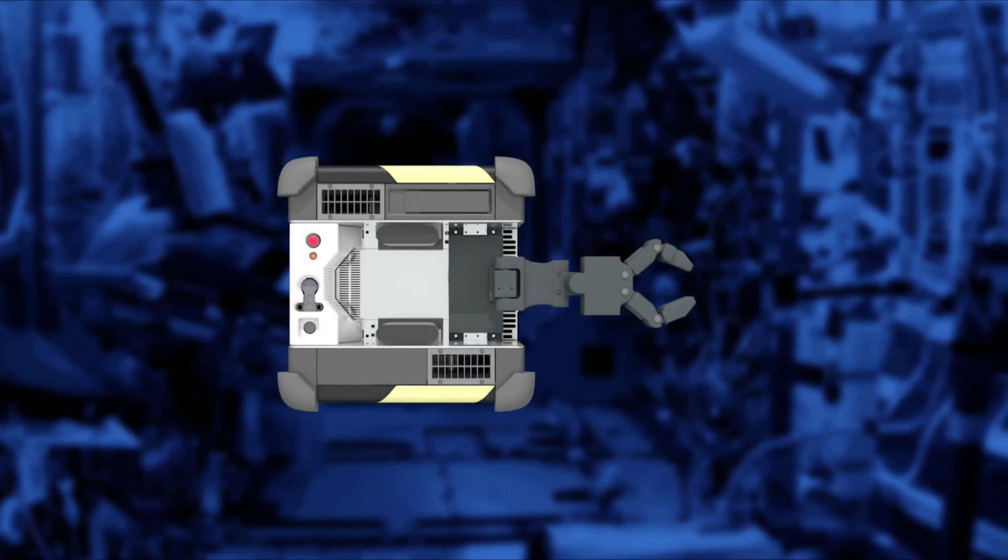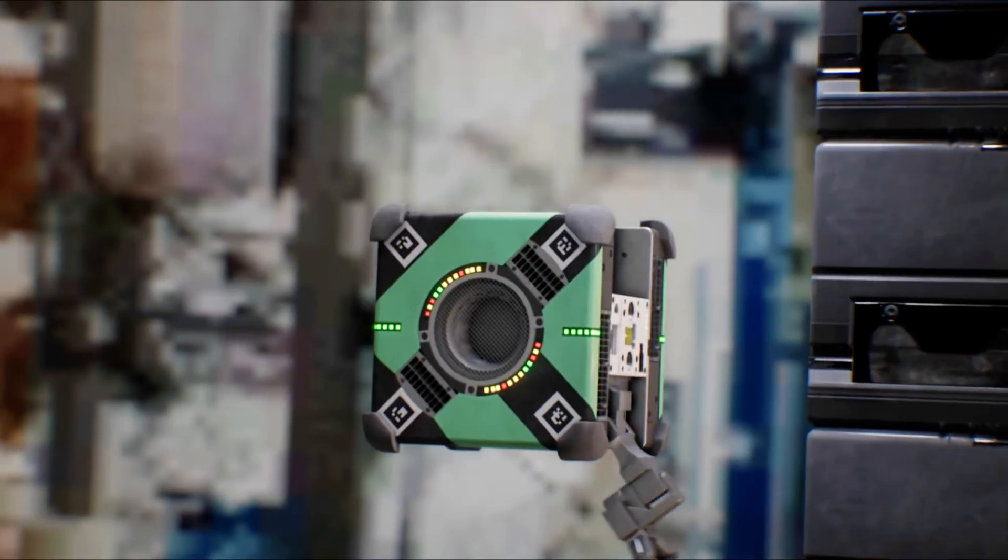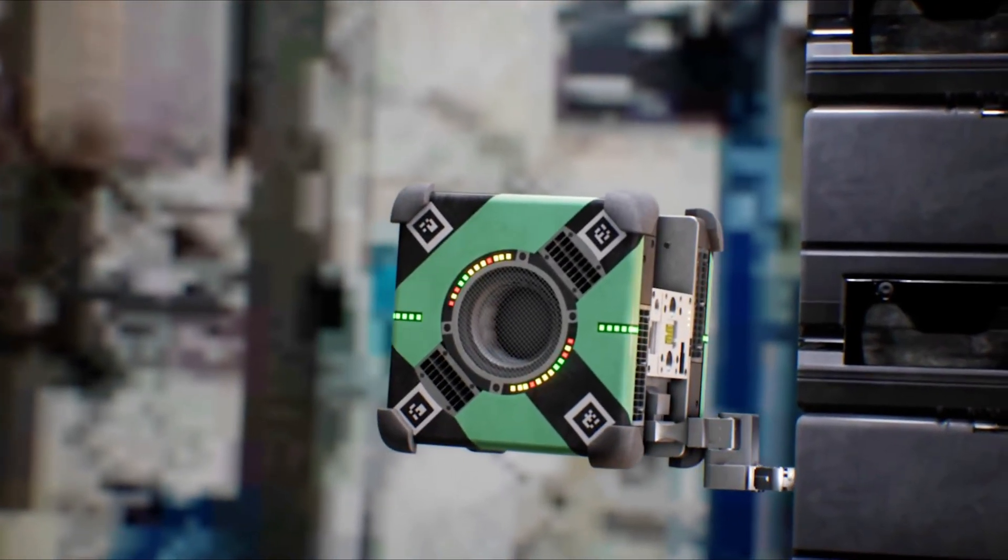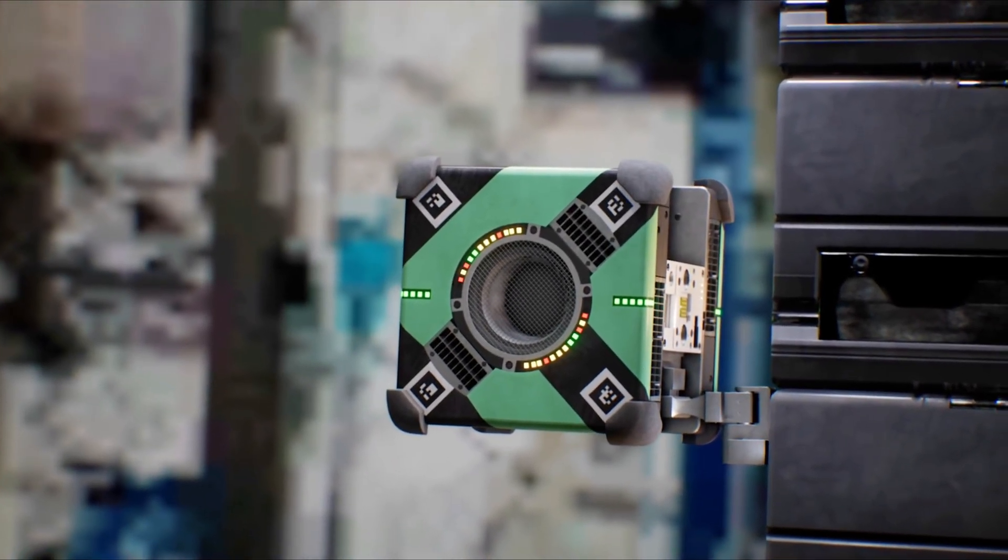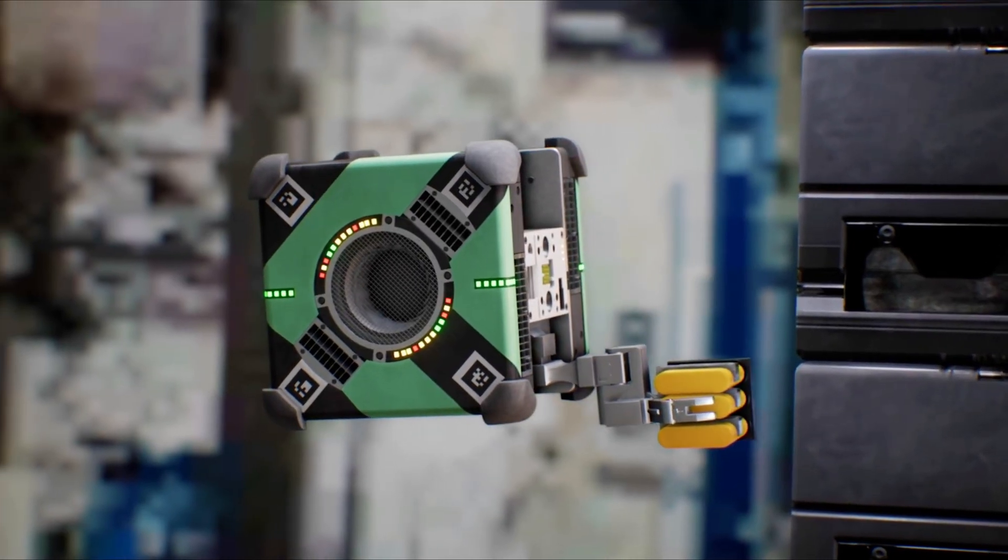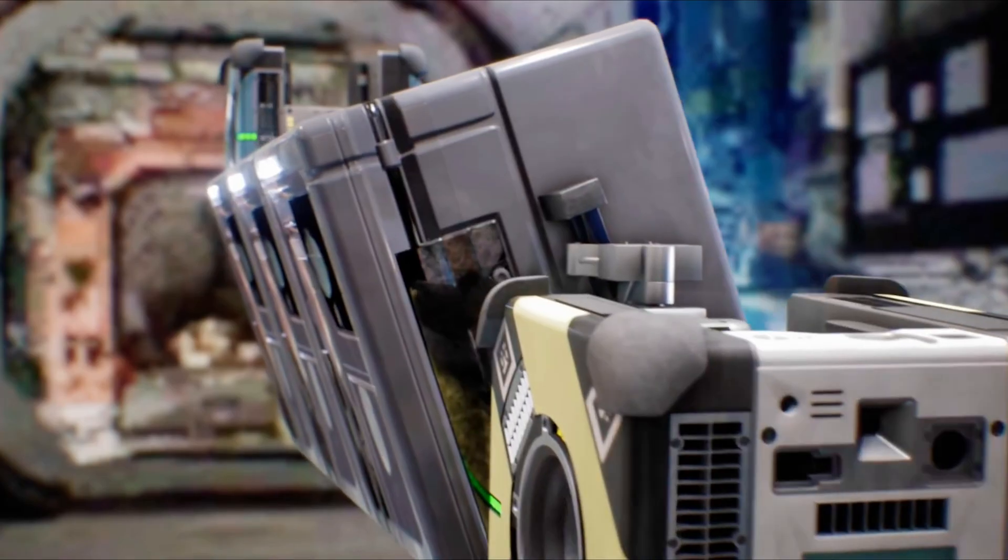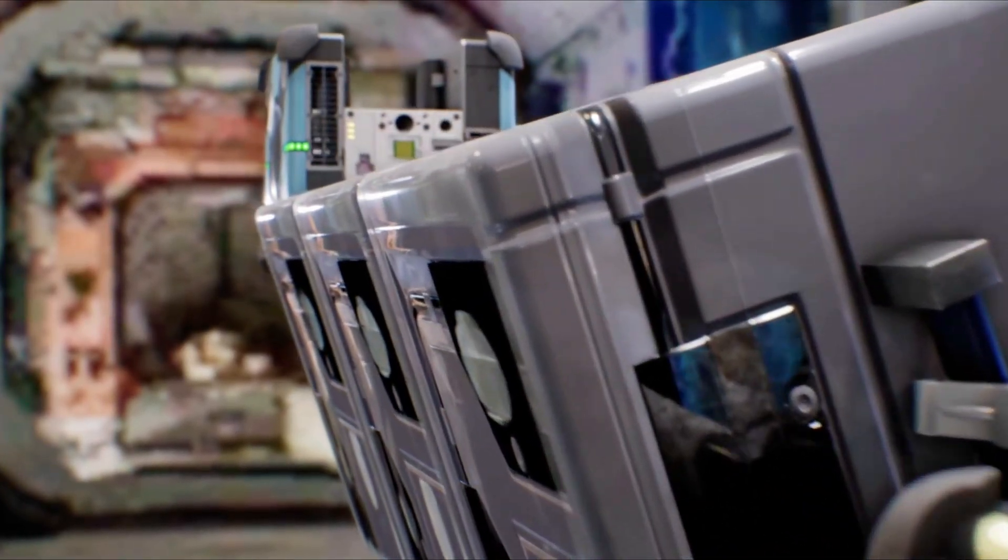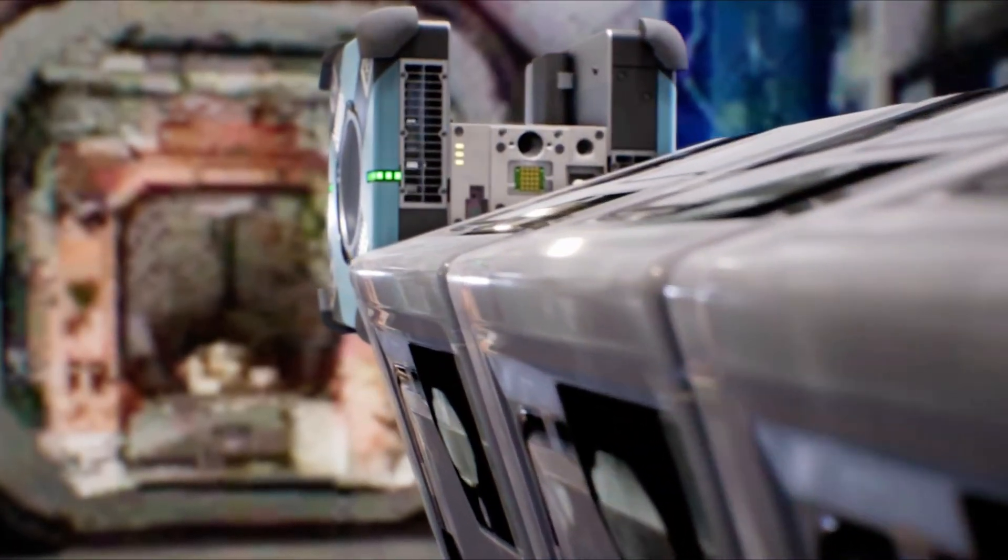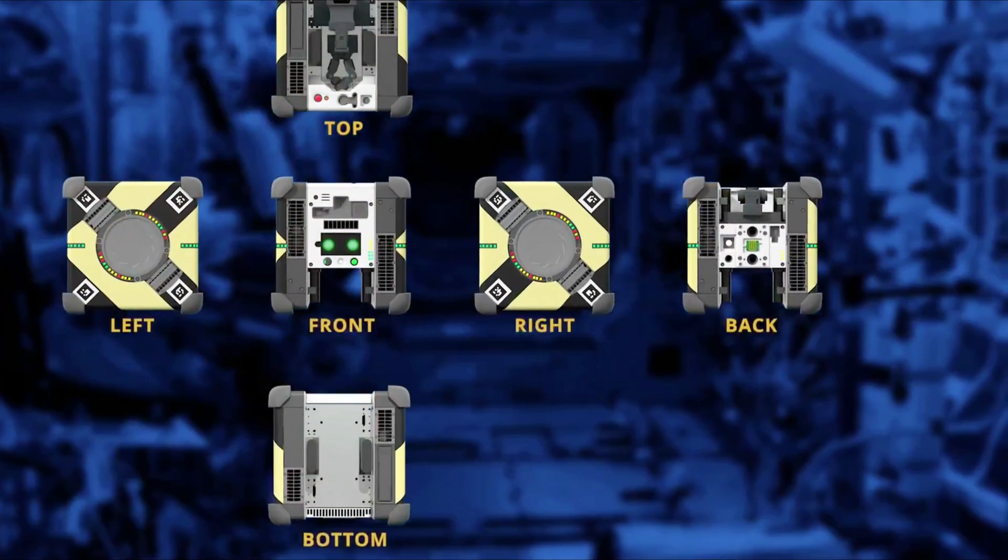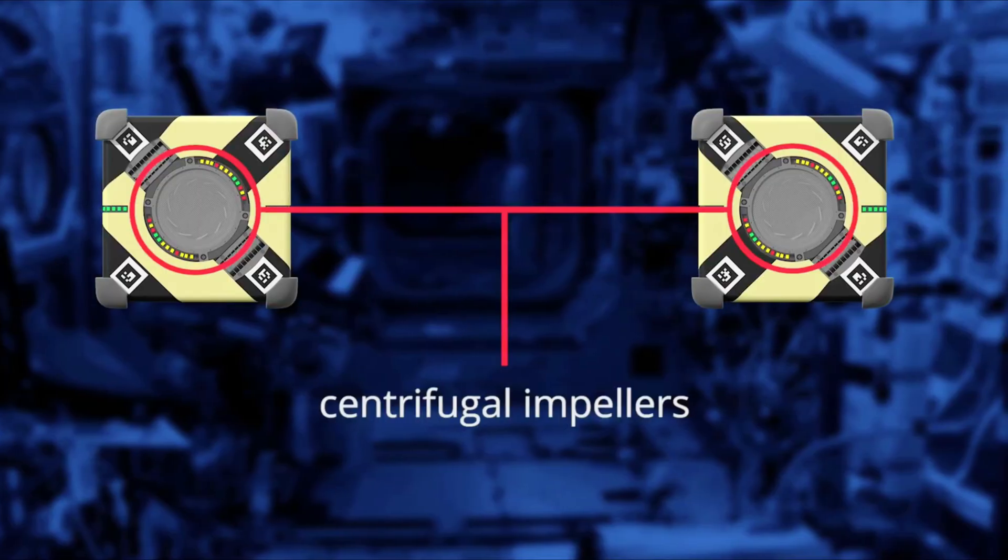The cube design lets them navigate tight spaces, carry tools and cameras, and dock with charging stations using propulsion systems perfect for microgravity. NASA's push for commercial development means private companies could create entire fleets of these assistants, making space stations safer and more efficient while reducing astronaut workload.